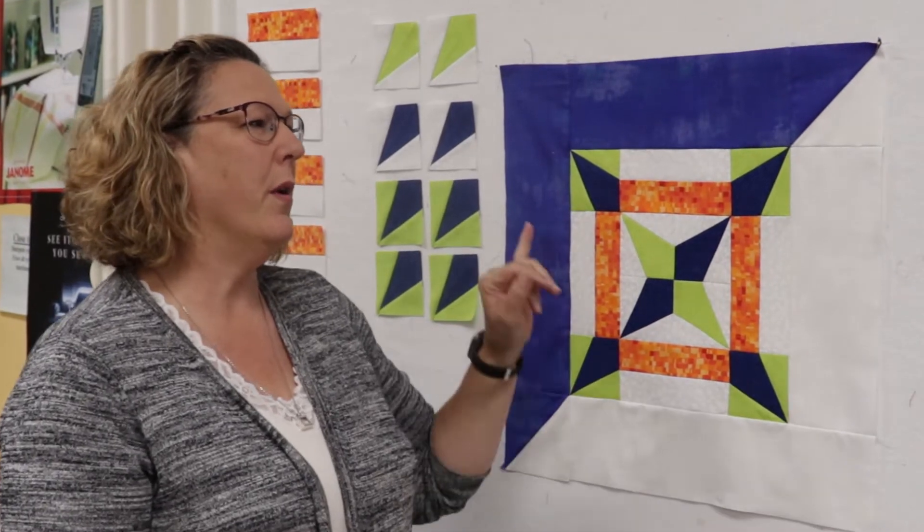Janet Glenn here to show you the Close to Homes basic July Saturday Sampler block. So this month we are going to be working on this unit right here. It's called the Creative Grid Kitty Cornered Unit. It's the same ruler that we did last week for the intermediate class.